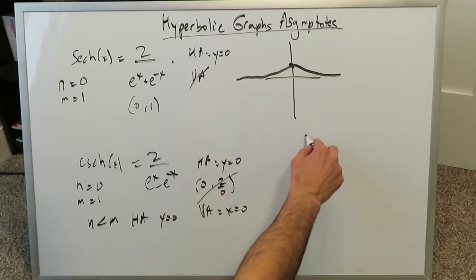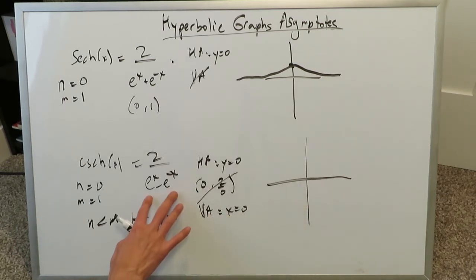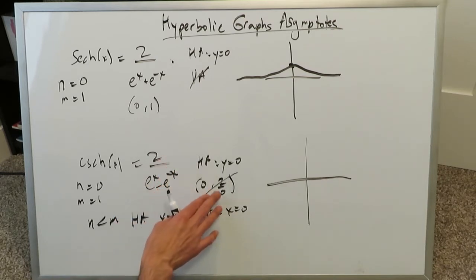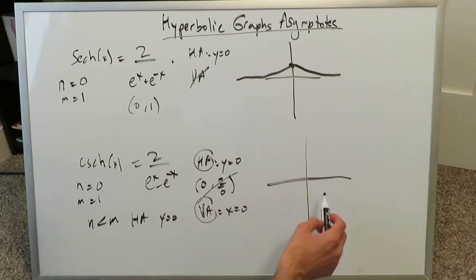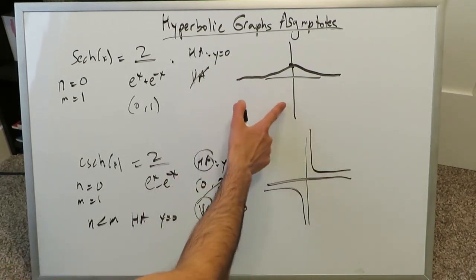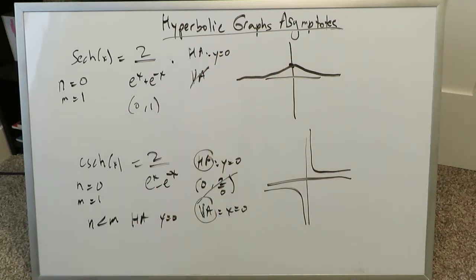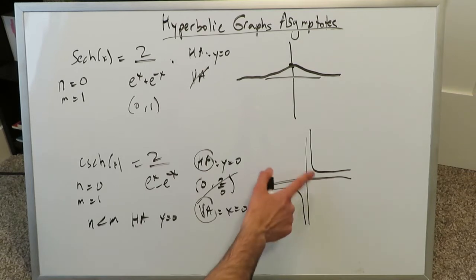For csch(x), the origin plays no role since x=0 gives an undefined denominator. The x-axis and y-axis are both asymptotes. For sech(x), the domain is minus infinity to infinity and the range is from 0 up to 1, including 1. For csch(x), the domain is (minus infinity, 0) union (0, infinity), and the range is likewise (minus infinity, 0) union (0, infinity).